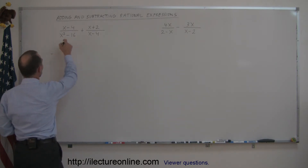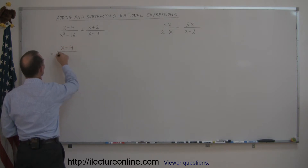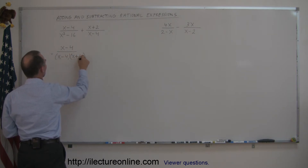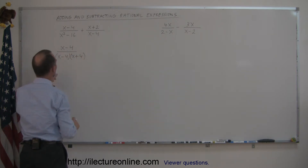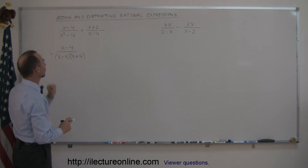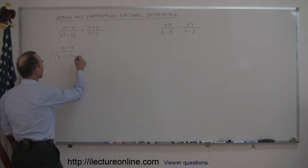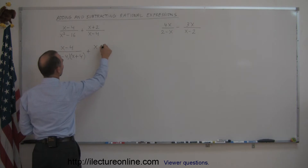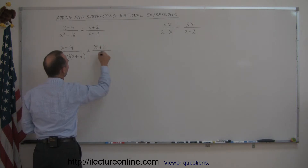We're going to factor the denominator of the first fraction. Because this is the difference of squares, we get an x and an x, a minus and a plus, and a 4 and a 4. If you multiply these together, you'll get back to this denominator, and then we still have the plus x plus 2 divided by x minus 4.